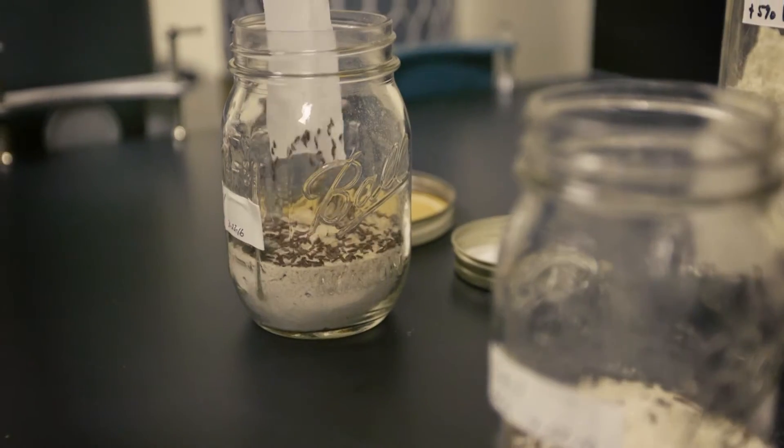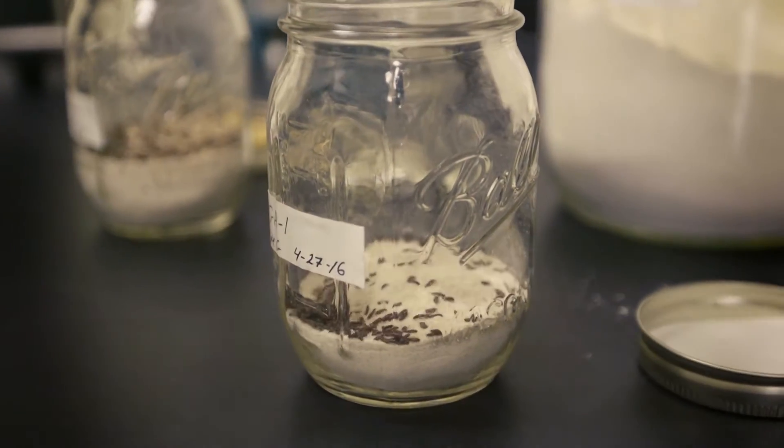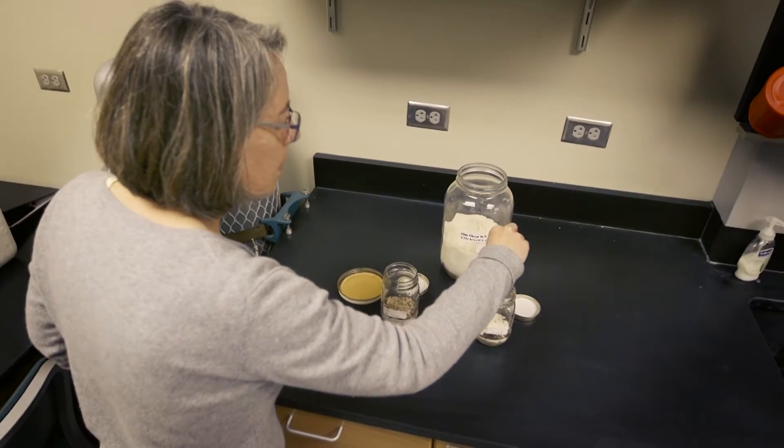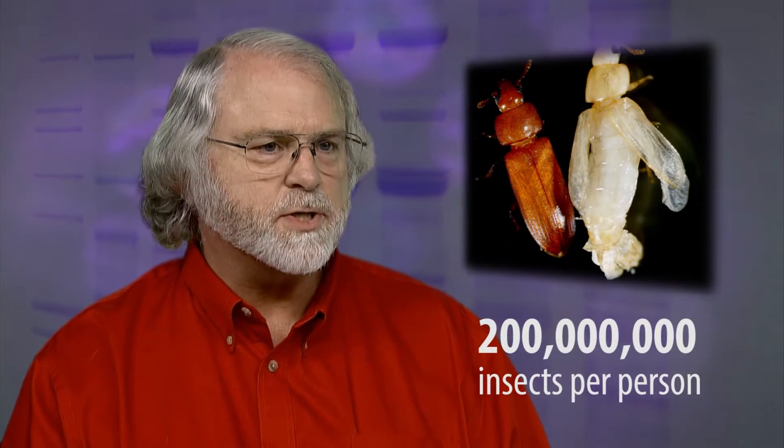Insects are important just for understanding biology. There are between 2 million and 30 million species of insects. So compared with humans, for example, there are about 10 quintillion insects on the earth at any one time. And so that's about 200 million insects for each person.